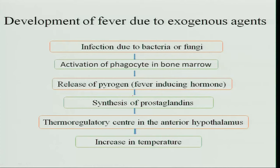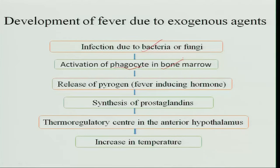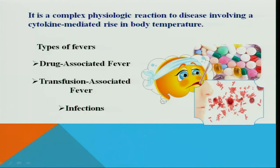How is fever developed from an exogenous agent? First there is an infection due to bacteria or fungi, which activates the WBCs of the blood — they have a phagocytic nature, meaning they engulf and kill bacteria. Activation of phagocytes in the bone marrow occurs, followed by release of pyrogen, the fever-inducing hormone, to fight the infection. Then there is synthesis of prostaglandins and the thermoregulatory center in the anterior hypothalamus is activated, resulting in increased temperature. It is a complex physiological reaction involving cytokine-mediated rise in body temperature.